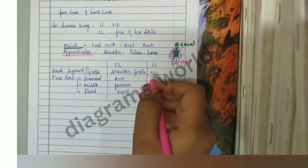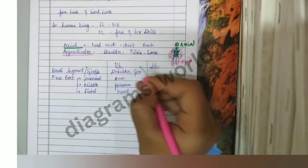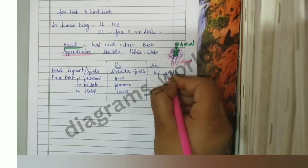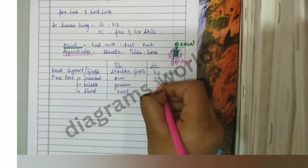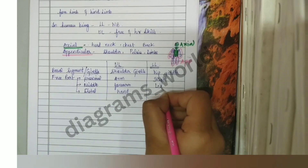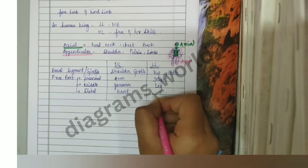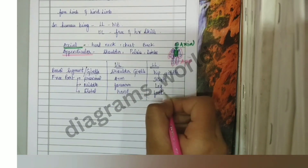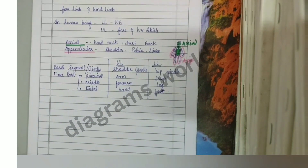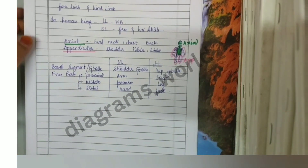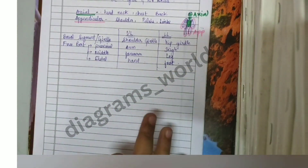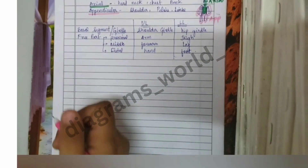In the lower limb we have the hip girdle, then the thigh as the proximal part, the leg as the middle part, and the foot as the distal part. Based on these areas, we will now look at the bones of each region.